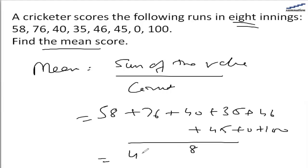So the total sum will come out to be 400 divided by 8 is 50. So the mean score which the cricketer scored is 50 runs per inning.